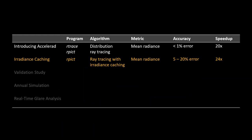Using irradiance caching, I can now achieve a speedup of 24 times—even faster than before—and accuracy is still within the 20% limit.